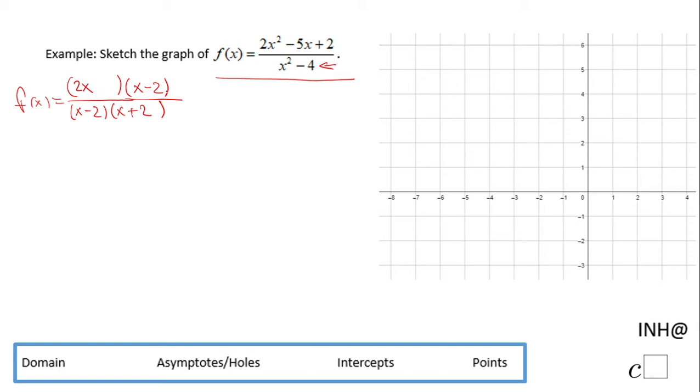So that will be 2x squared minus 4x, 2x minus 1. This is the factor formula of the numerator.